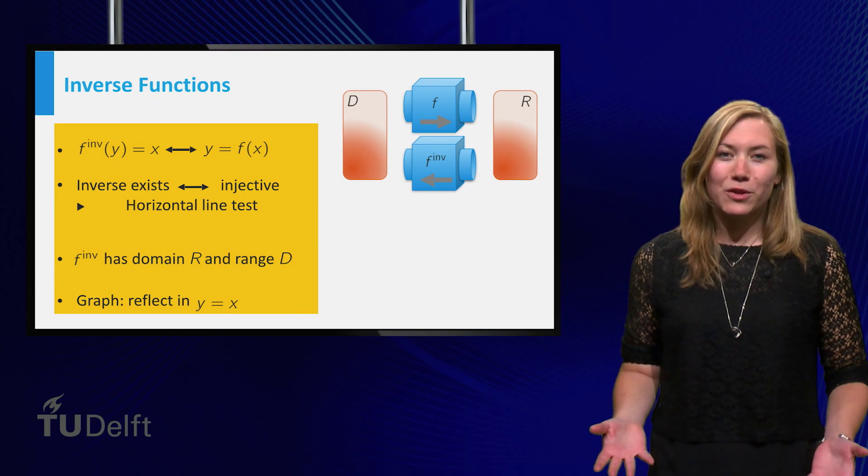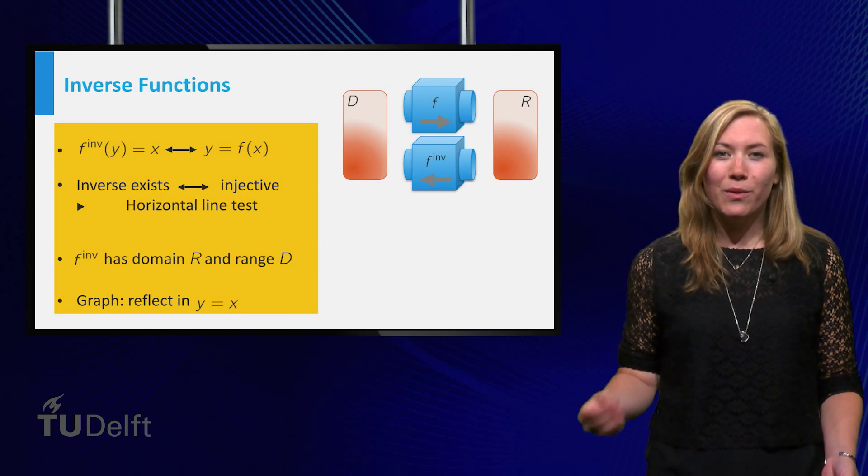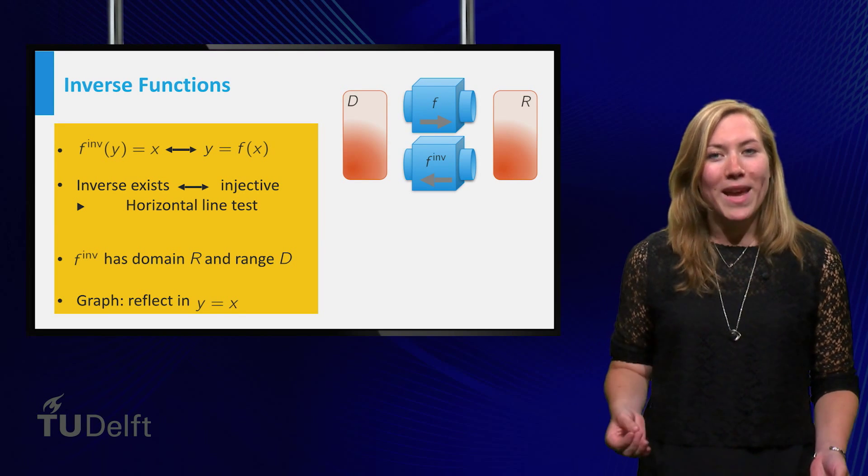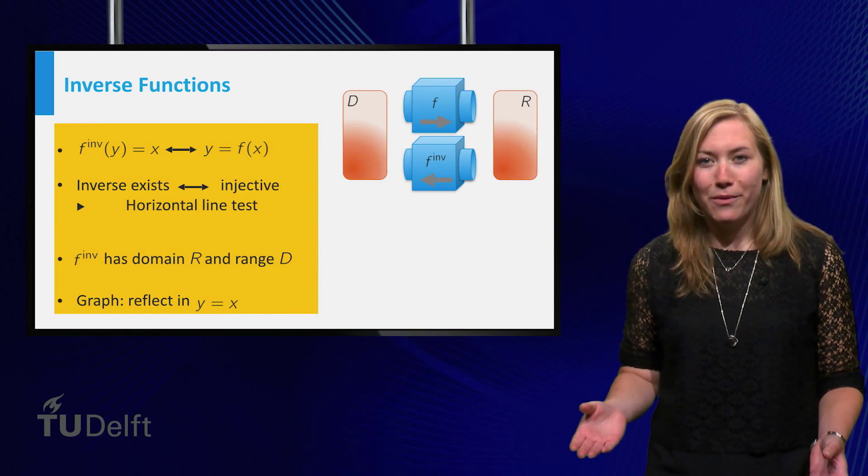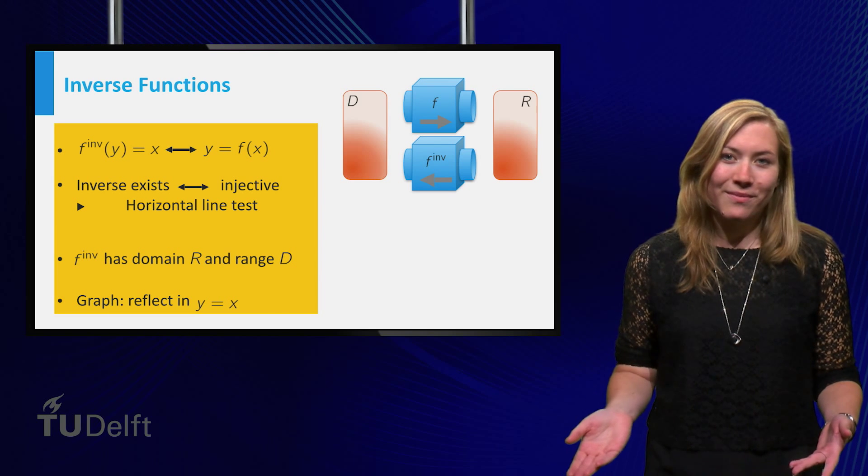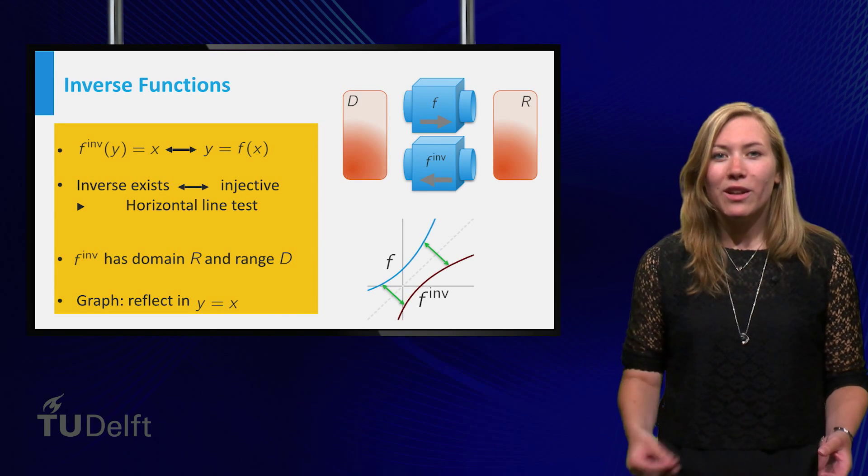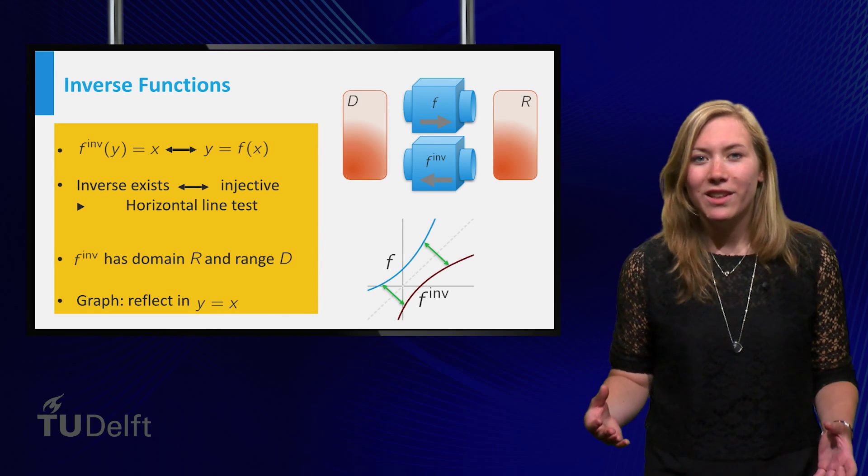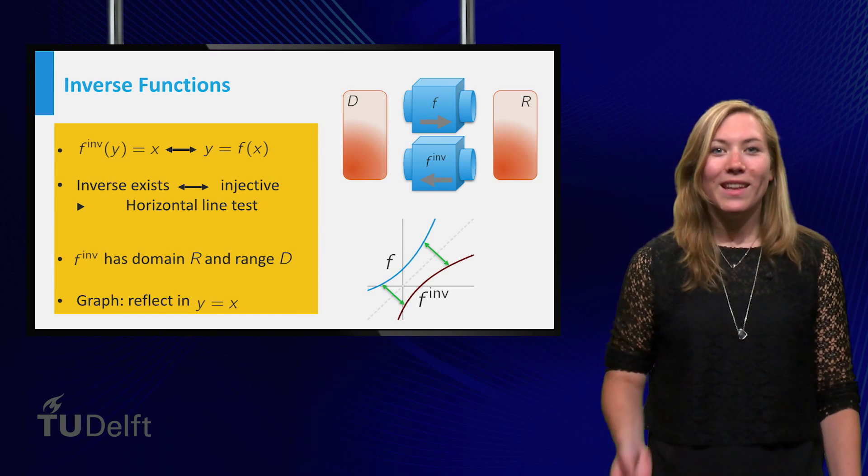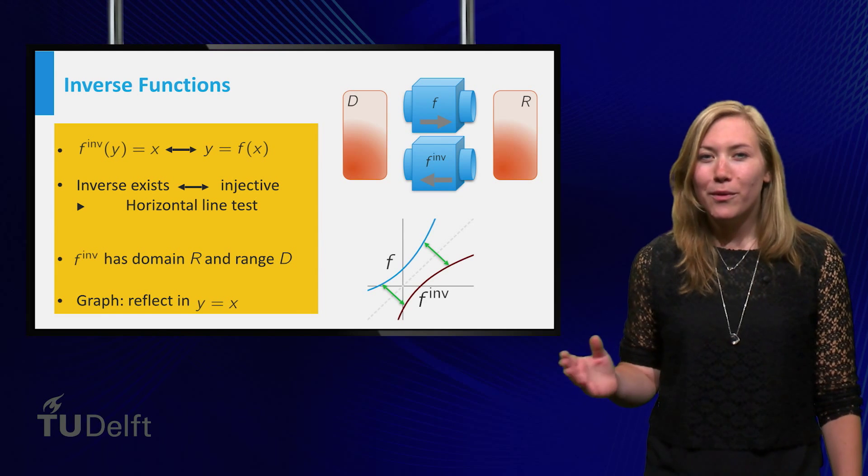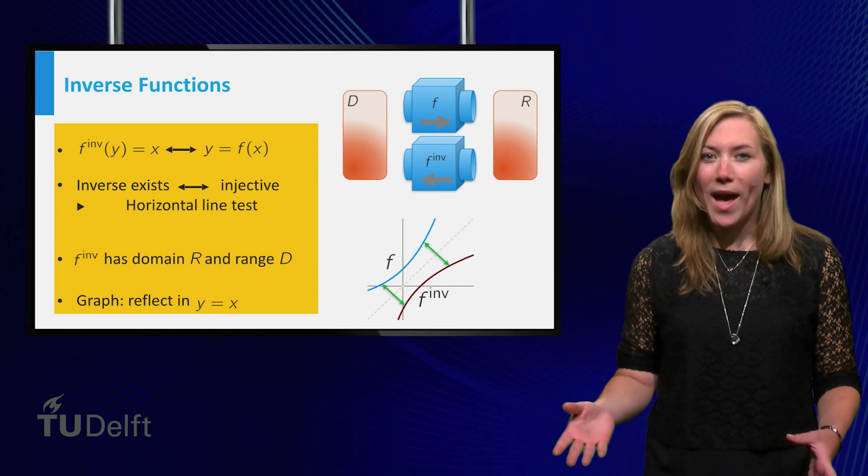As inverse functions interchange the role of input and output, the domain of an inverse function is the range of the original f and vice versa. Moreover, the graph of an inverse function is obtained by interchanging the x and y axis, that is, reflecting the graph of f in the line x equals y.